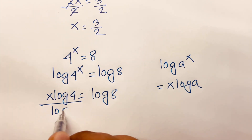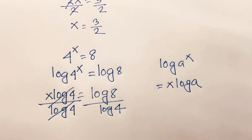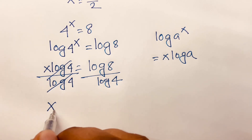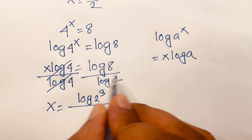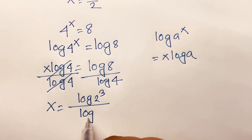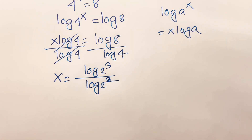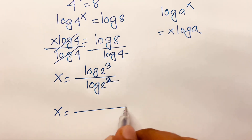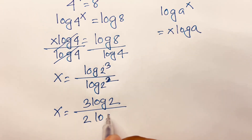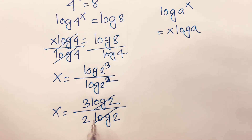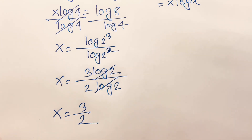If I divide both sides by log 4, the log 4 cancels. We find x is equal to log 8 over log 4. Log 8 is log 2 to the power 3, and log 4 is log 2 to the power 2. So x is equal to 3 log 2 over 2 log 2. The log 2 terms cancel, and we find x is equal to 3 over 2.